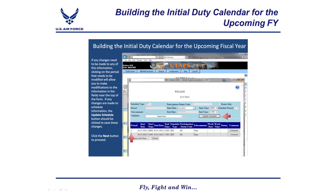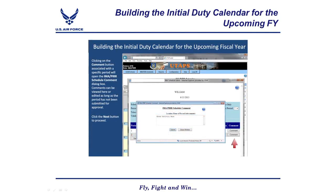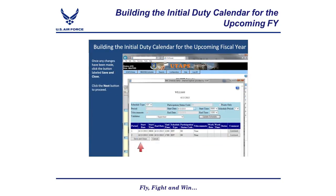Clicking on the Comment button associated with a specific period will open the IMA PIRR Schedule Comment dialog box. Comments can be viewed here or edited as long as the period has not been submitted for approval. Once any changes have been made, click the button labeled 'Save and Close.' The period will be saved to the calendar in white, signifying that it has been built but not yet submitted for approval.